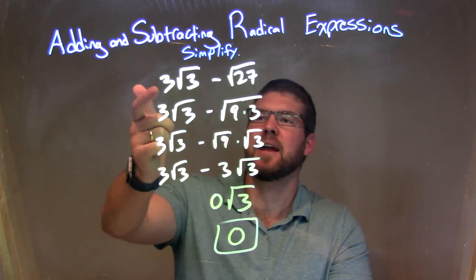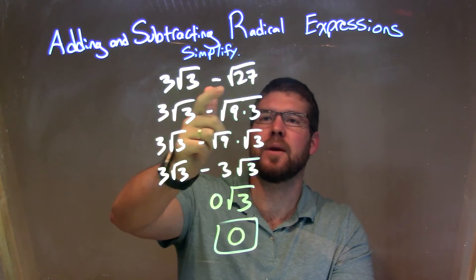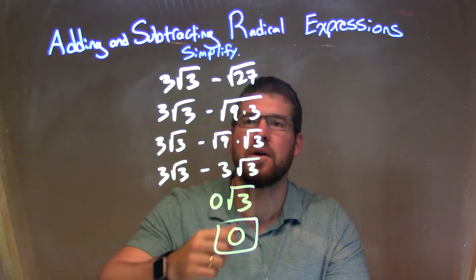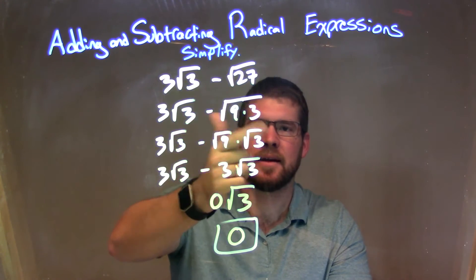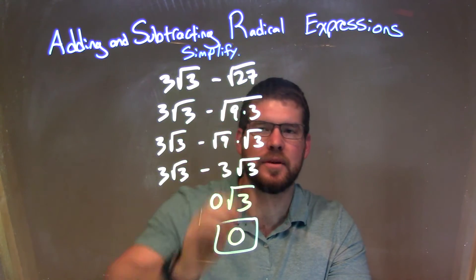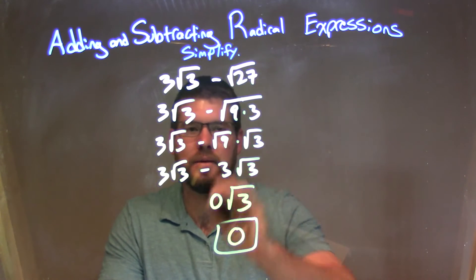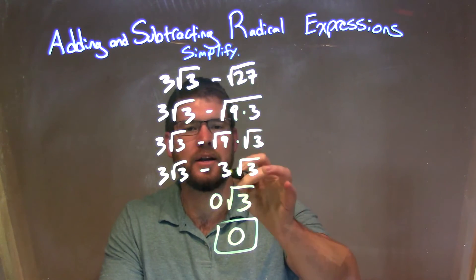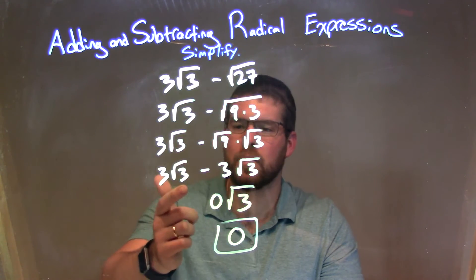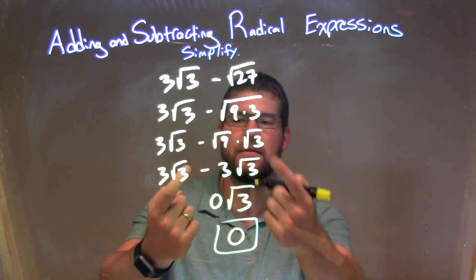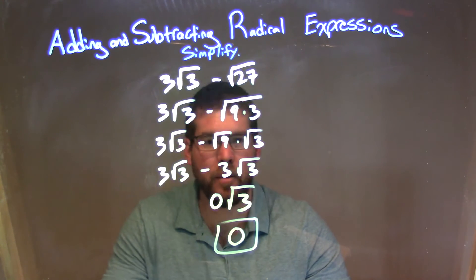So let's recap. We're given 3 times the square root of 3 minus the square root of 27. Well, 27 breaks down to be 9 times 3. And then the square root of 9 times 3, we can break apart to be two different square roots, the square root of 9 times the square root of 3. Simplify the square root of 9 to be 3. We now have 3 square root of 3 minus 3 square root of 3. Two square roots that are the same. That was our goal.